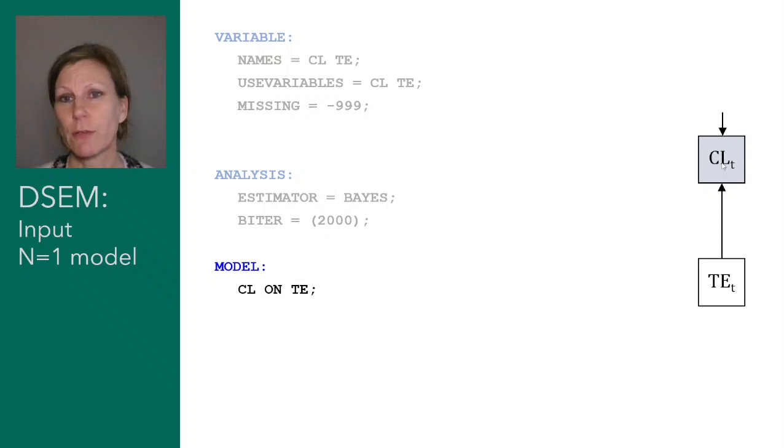Closeness is now a dependent variable, which means there will also be a part that is not predictable from tension, and that's indicated here by this little arrow.